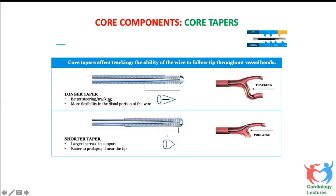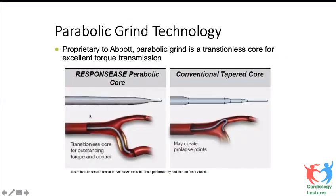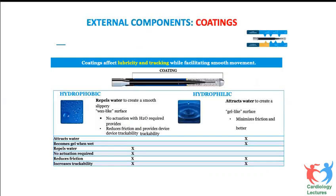Looking at core tapering: with a longer taper, the tip gradually narrows over a long distance and the body follows the tip more easily. A shorter transition from broad to narrow core causes more prolapse. For acute angulations — like a left main to circumflex lesion where circumflex originates at more than 100 degrees with an ostial circumflex lesion — a regular wire won't follow. You need a tapered core with probably a broader core as well.